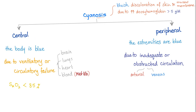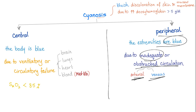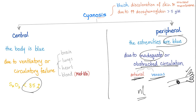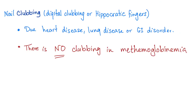The cyanosis in methemoglobinemia is central, with SaO2 less than 85%. Peripheral cyanosis involves blue extremities due to inadequate or obstructed circulation — arterial or venous problems — and SaO2 is probably normal. Nail clubbing, also known as digital clubbing or Hippocratic fingers, is associated with heart, lung, or GI disease. There is no clubbing in methemoglobinemia.